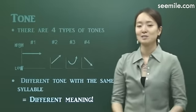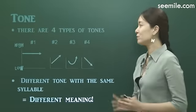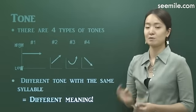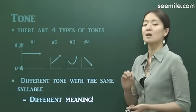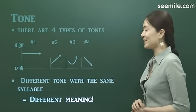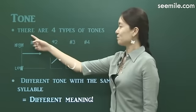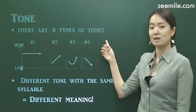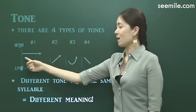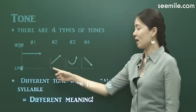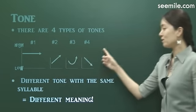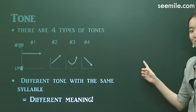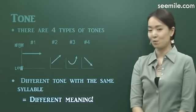Let's move on to tone. I'll briefly explain the definition of tone, because we are going to cover it in detail at the very last part of our class. First of all, there are four types of tones in Chinese: first tone Ā, second tone Á, third tone Ǎ, fourth tone À — four types of tones in Chinese.